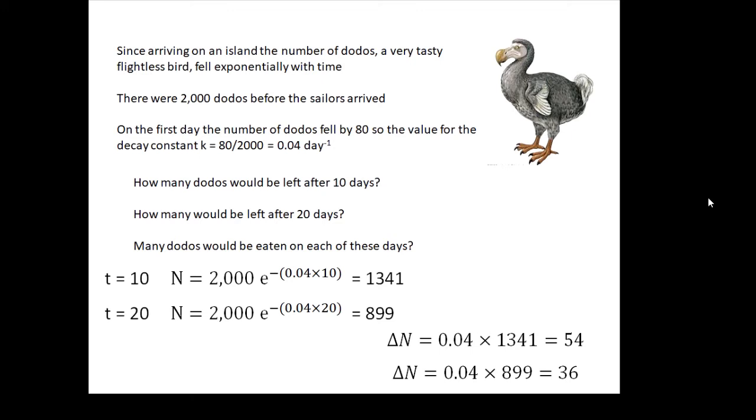And then the change in n, I'm calling it delta n, or dn/dt if you like, is dn/dt is k times n. So we know what the values of n are, so we can work out the change in n, or dn/dt, is 54 on the 10th day, and 36 on the 20th day, going down exponentially.